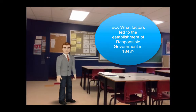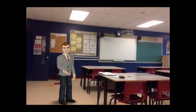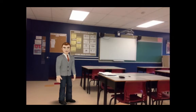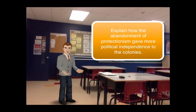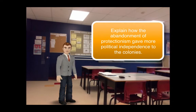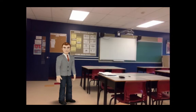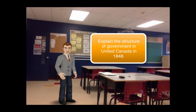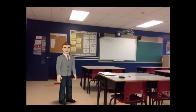In order to show that you can answer that essential question, you must be able to identify the key members of the political alliances in United Canada. You must be able to explain how the abandonment of protectionist policy granted more political autonomy to the British colony. And finally, you must be able to explain the structure of government in United Canada in 1848. Let's get started.